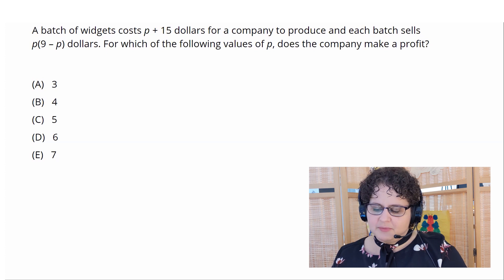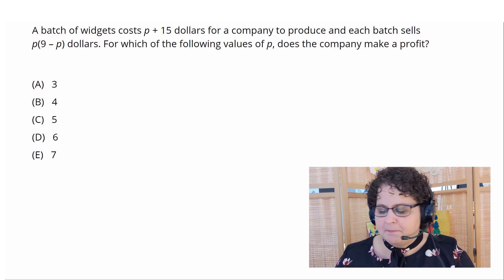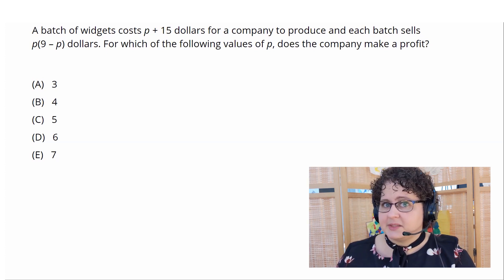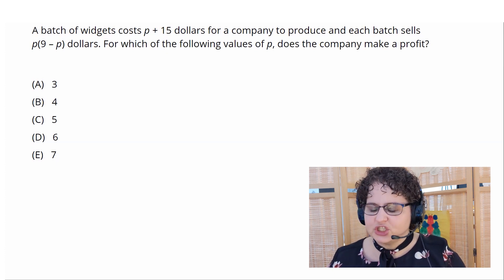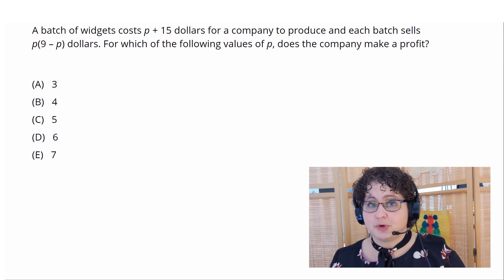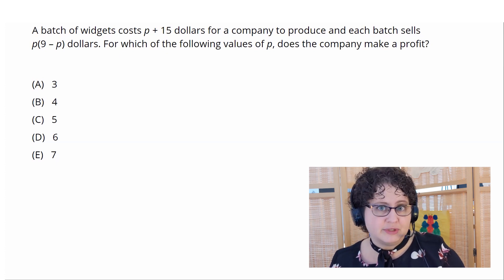And the expressions that we're given, p plus 15, p times 9 minus p, those are not particularly complex expressions. So if I'm going to make a mistake, it's going to be in the algebraic translation. So what I'm going to recommend is no algebraic translation. Instead, let's do what we call working backwards and let's use these answer choices.